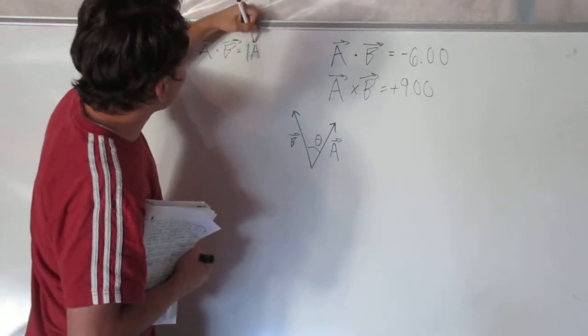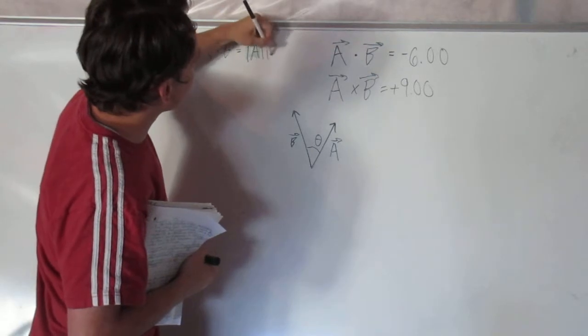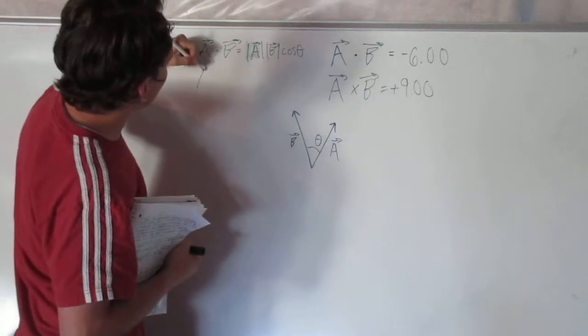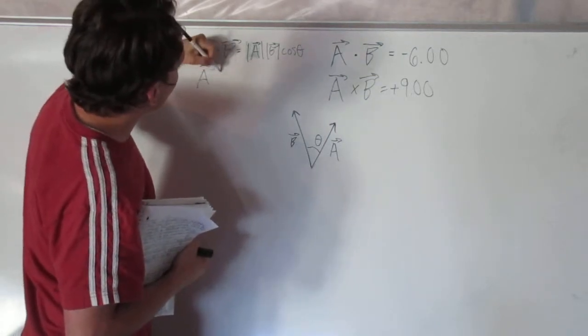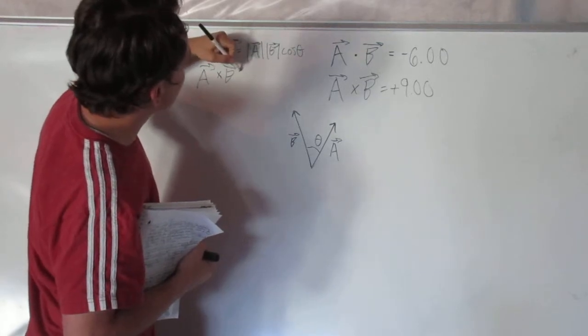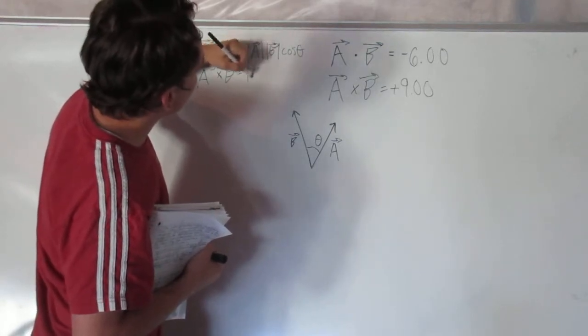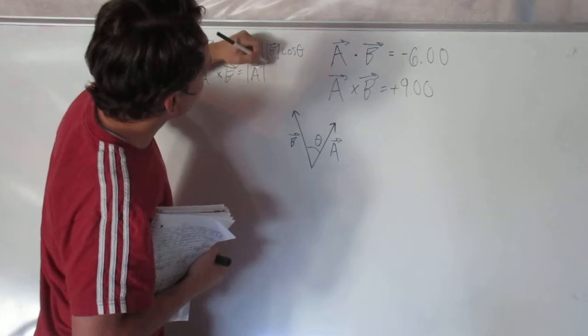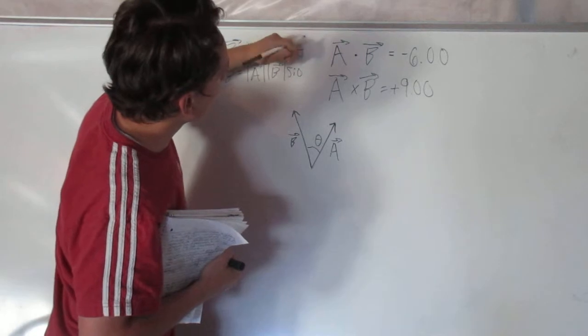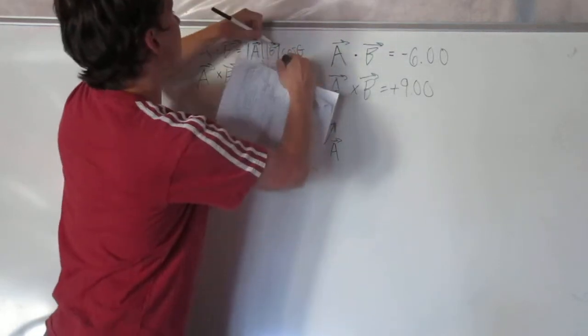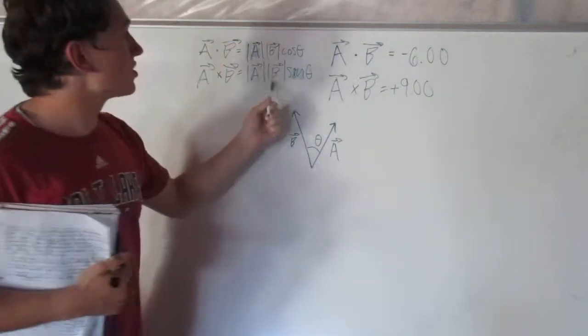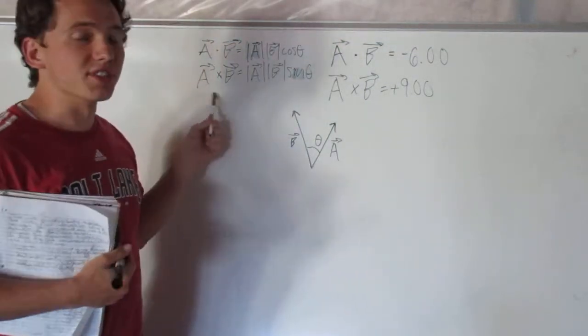We know that A dot B is the same as the magnitude of A times the magnitude of B times the cosine of theta. We also know that A cross B is the same as the magnitude of A times the magnitude of B times sine of theta.